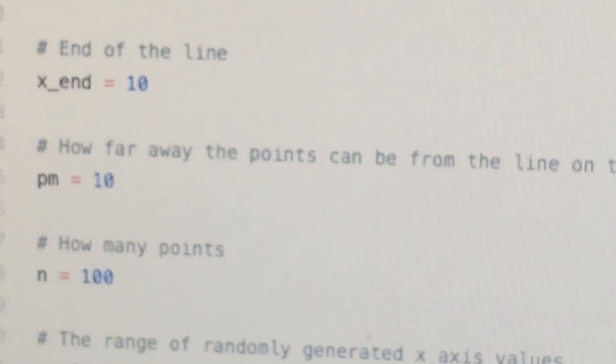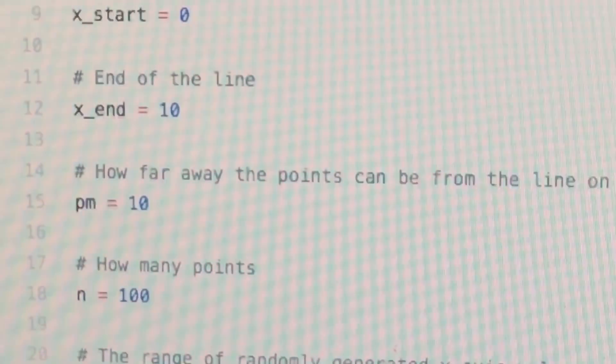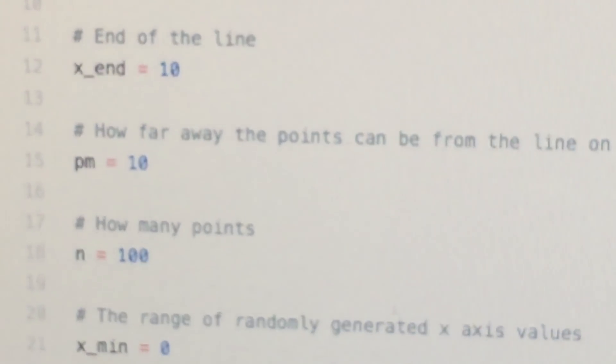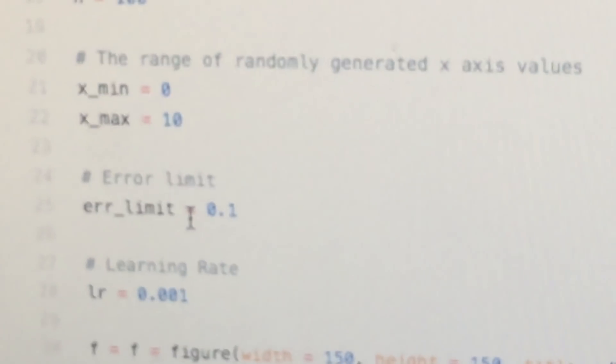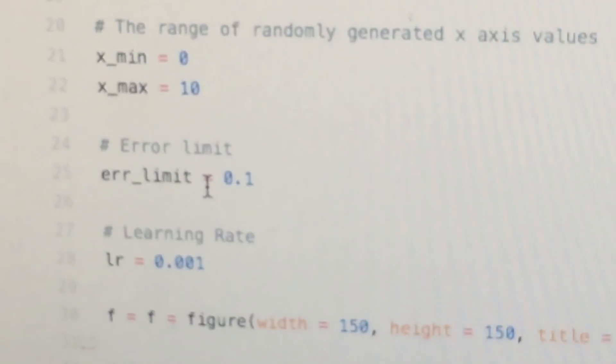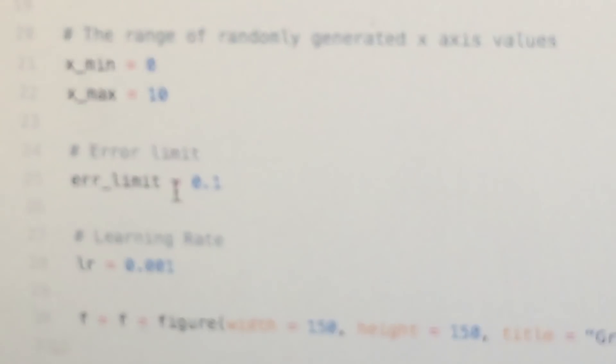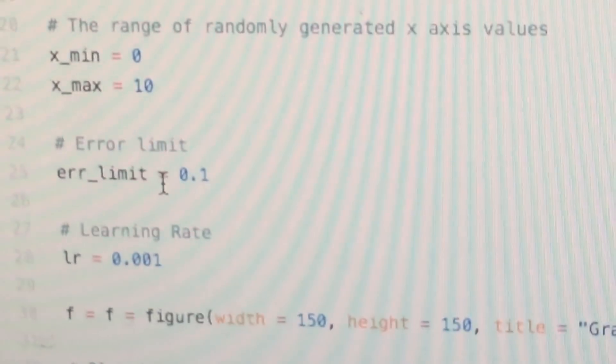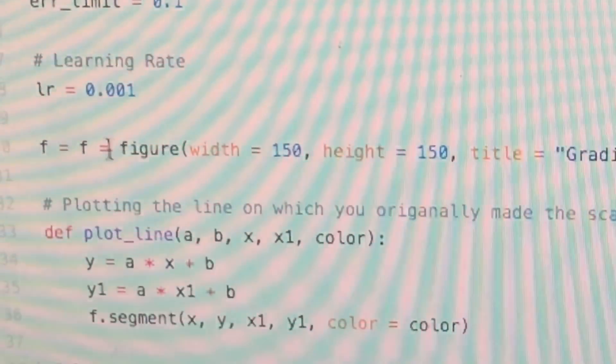So this is the error limit. The end value, the end product of gradient descent will have an error that is less than this limit. And this learning rate - before we talked about that skier analogy - this learning rate is basically how much the skier skis down each time before it redirects its skis to the angle of the slope.